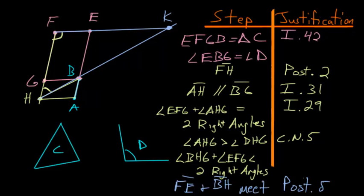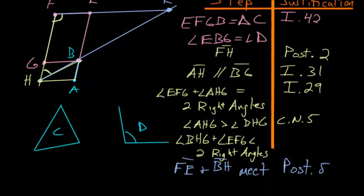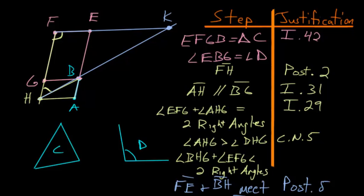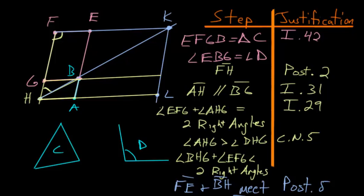From here, let's construct a line through point K parallel to line AE — let's call it KL parallel to AB — which we can do because of Book 1 Proposition 31. Then let's extend lines GB and AH so that they meet this line KL, labeling this intersection point M.